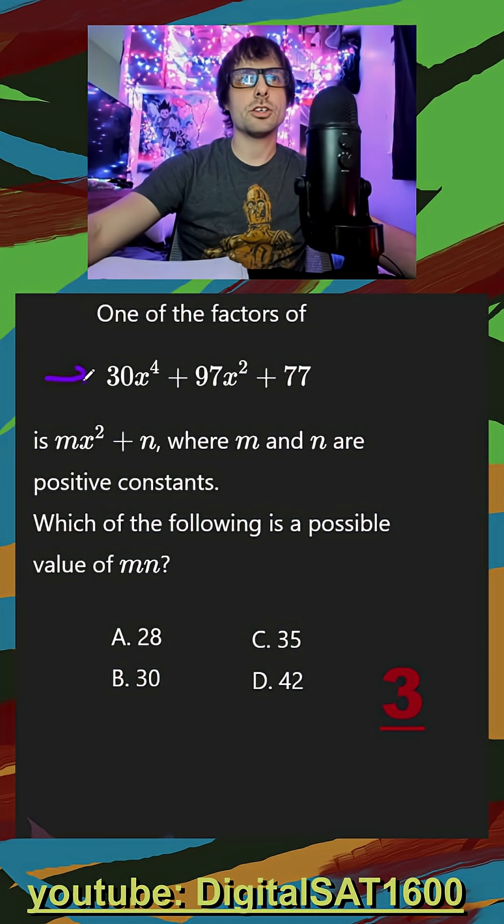One of the factors of 30x⁴ + 97x² + 77 is mx² + n, where m and n are positive constants. Which of the following is a possible value of m times n?